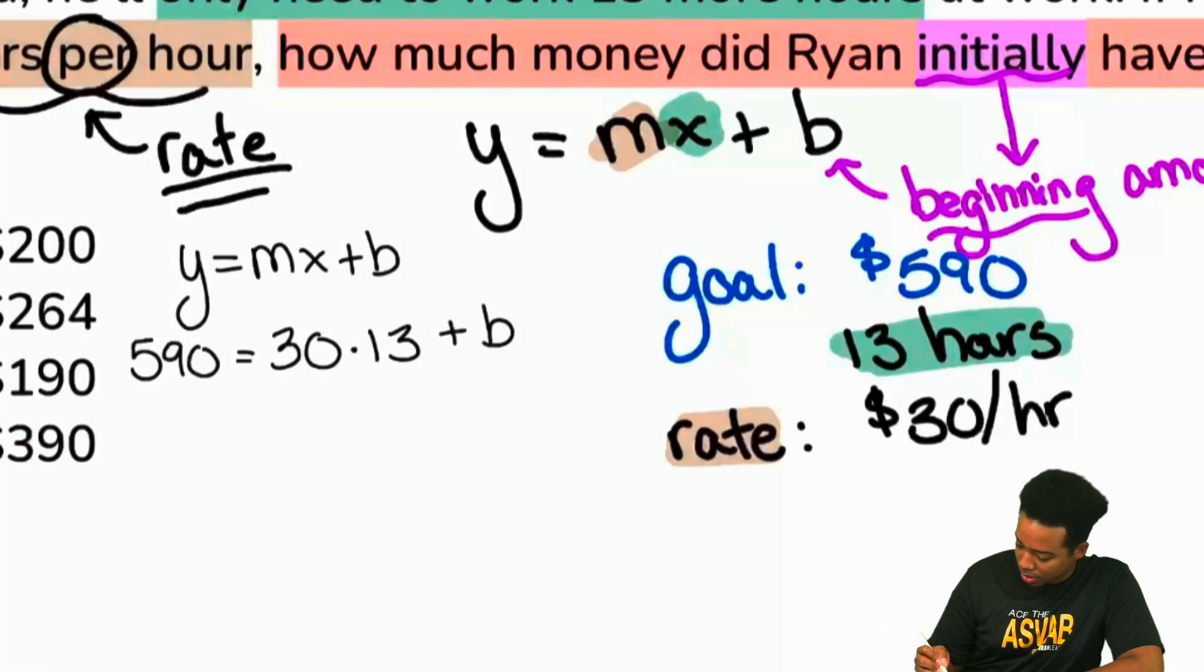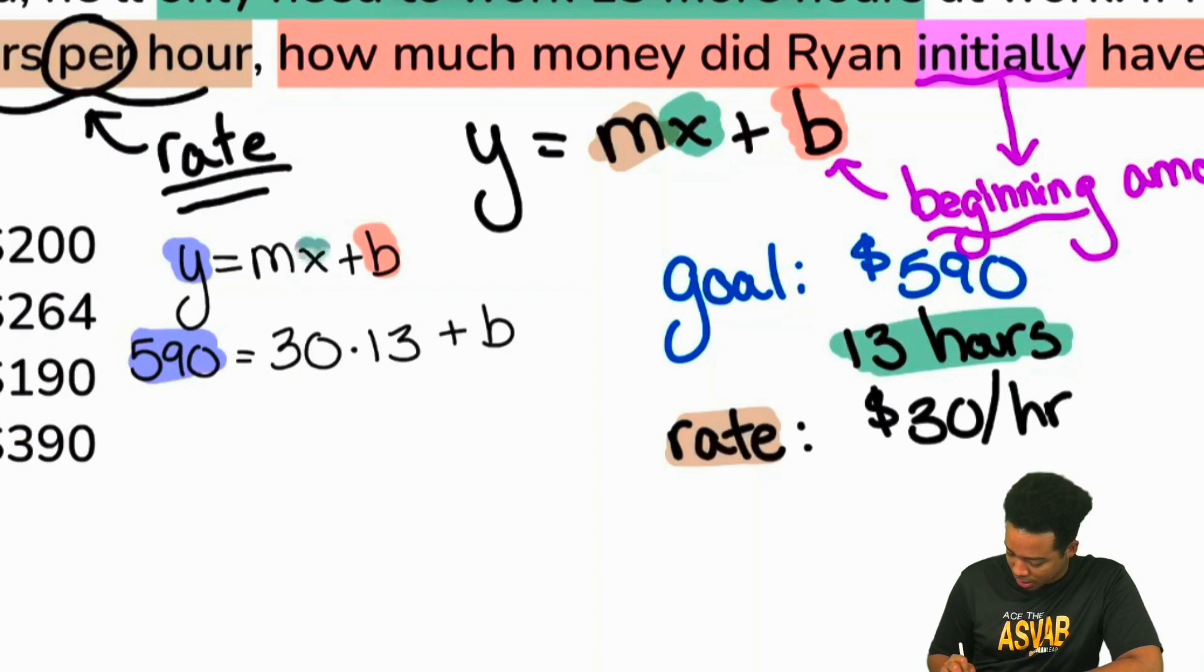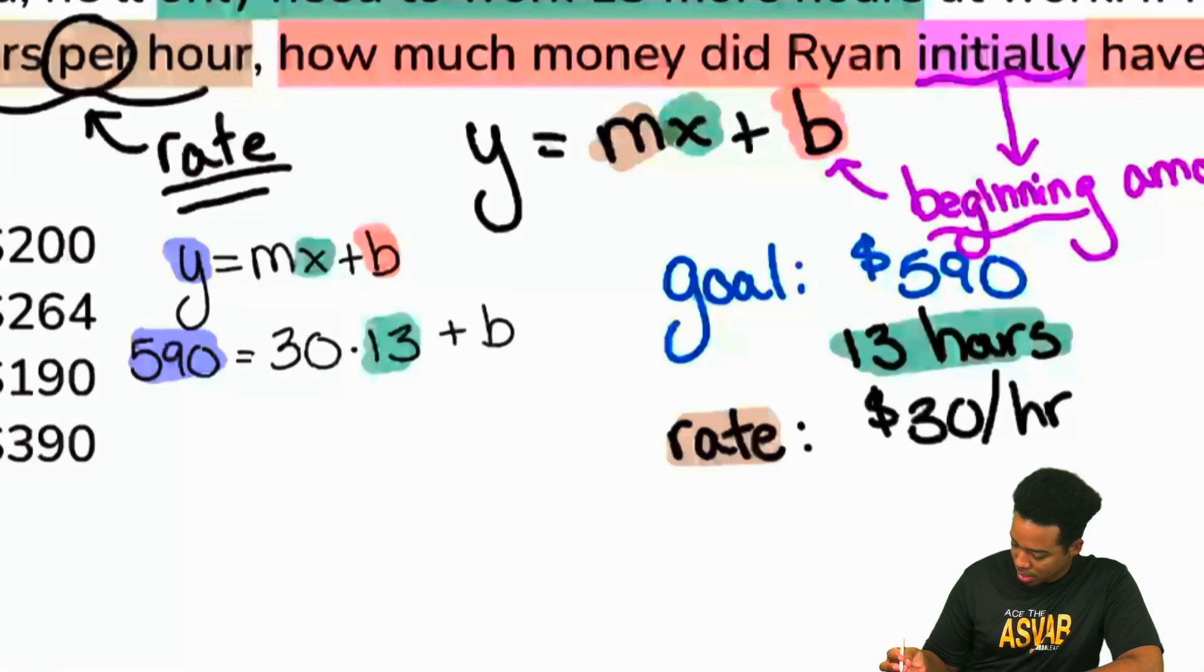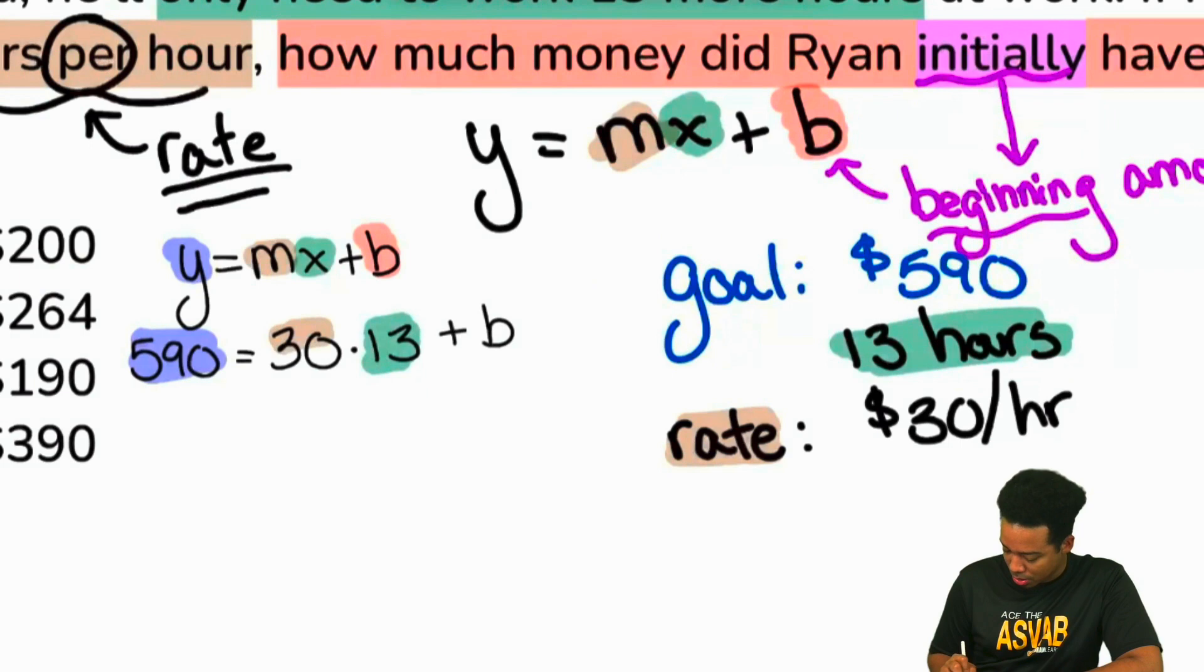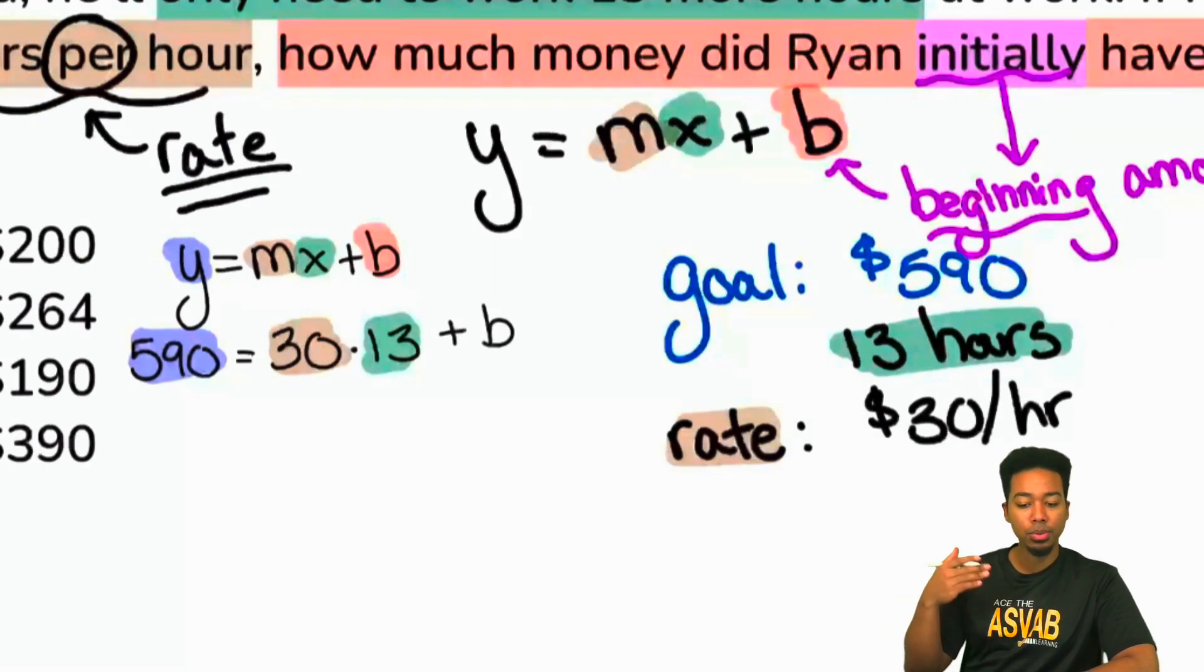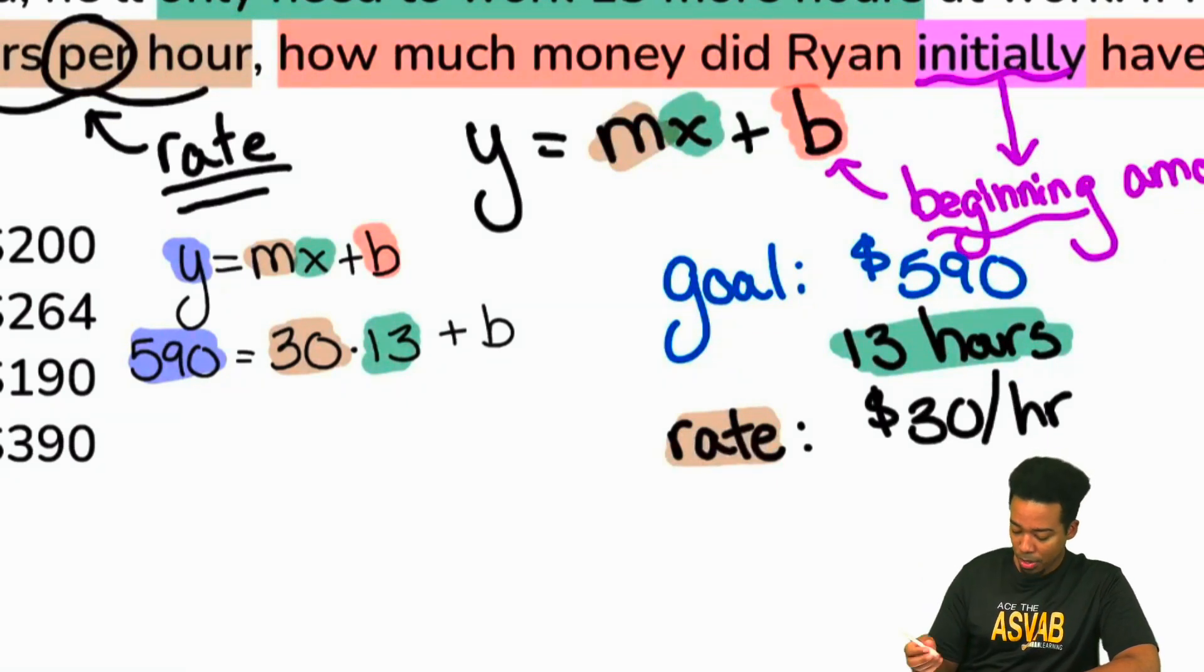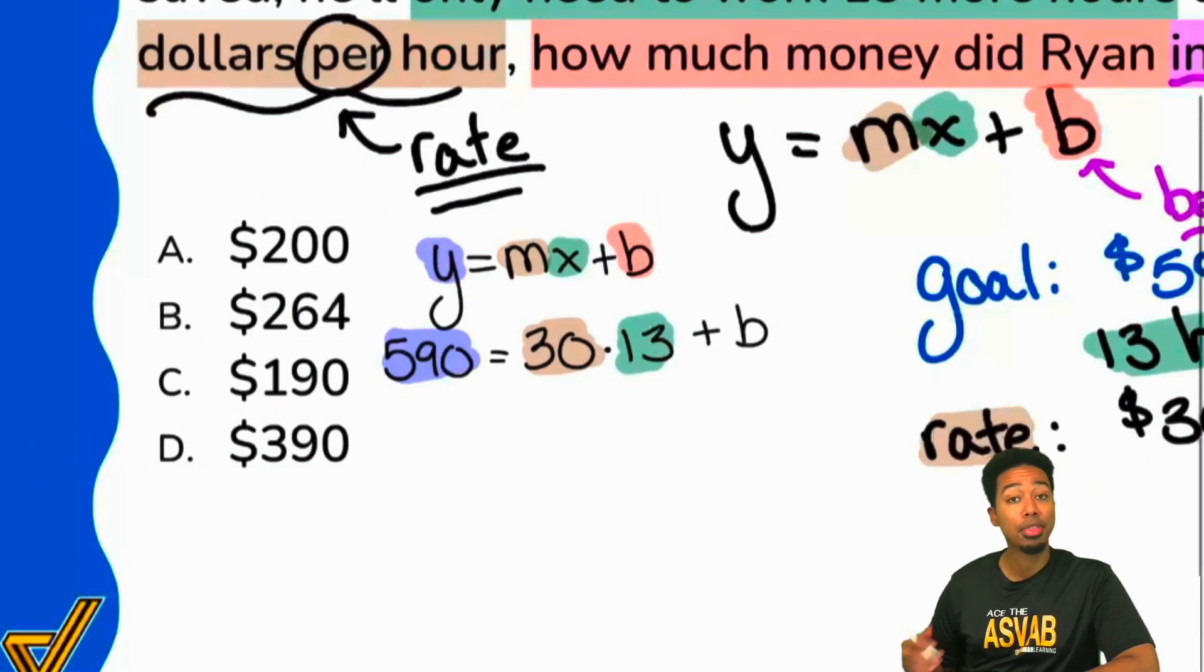If I wanted to go ahead and just kind of bring it all together, here's the beginning amount that we're looking for. Then over here we have the goal, the 590, the 13 hours, the time, and then we have ourselves the rate, m, $30 per hour. So the b is what we're solving for, and the first thing we'll do here is just to simplify, we'll figure out what 30 multiplied by 13 is.